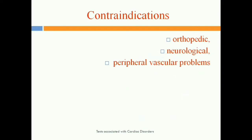Contraindications — people who cannot perform this exercise stress test — include orthopedic patients with joint or knee problems, patients with neurological disorders where voluntary movements are not coordinated and the person cannot walk properly, and patients with peripheral vascular problems such as deep vein thrombosis where the person cannot walk for a long time.